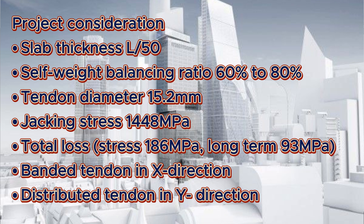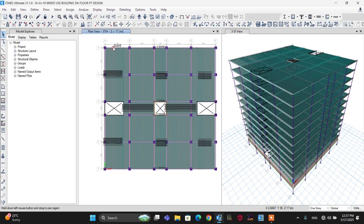The concrete grade is C35 to C45. For reinforcement we use S500. The pre-stressing tendon diameter is 15.2 mm with a total area of 166.4 mm². The tendon jacking stress is 1448 MPa. Total losses are divided into two parts: short-term loss of 186 MPa and long-term loss of 93 MPa. Banded tendons are aligned to the X direction and distributed tendons to the Y direction.